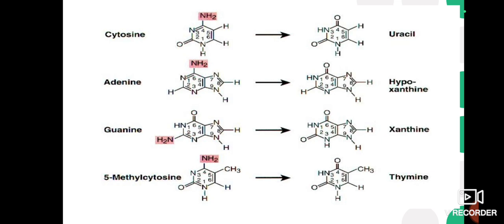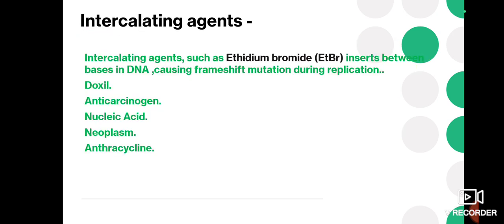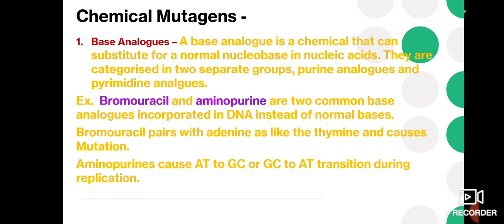Next are chemical mutagens. Chemical mutagens involve base analogs, intercalating agents, and some metals. First we will discuss base analogs. A base analog is a chemical that can substitute for a normal nucleobase in nucleic acid. They are categorized into two groups: purine analogs and pyrimidine analogs.